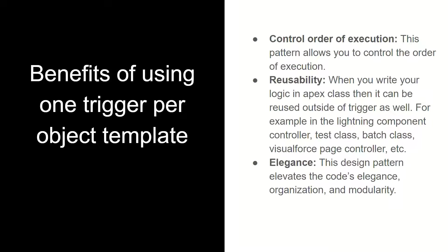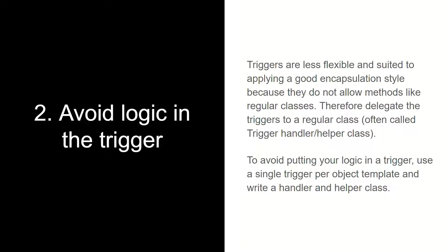The benefits of using one trigger per object: first, it controls the order of execution. Second, reusability — when you write your logic in Apex classes, it can be reused outside of the trigger as well, because the trigger is not dependent on the class and the class is not dependent on the trigger; they are independent. We are simply calling a class when a particular trigger event fires.